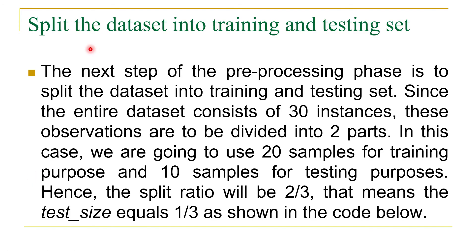Now after loading the dataset, the next step will be to split this dataset into training and test set. In this dataset we have a total of 30 records. These 30 records will be divided into two parts. 20 samples will be considered for training purpose while 10 samples will be considered for testing purpose. In simple words, two-thirds of data will be used for training and one-third of data will be used for testing.